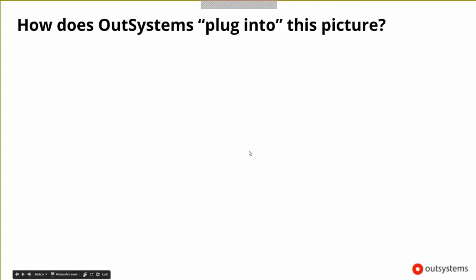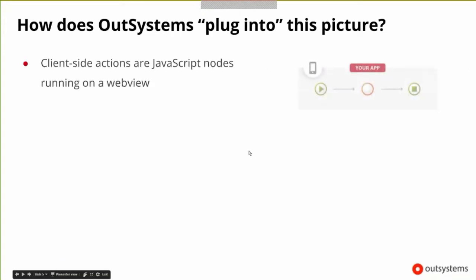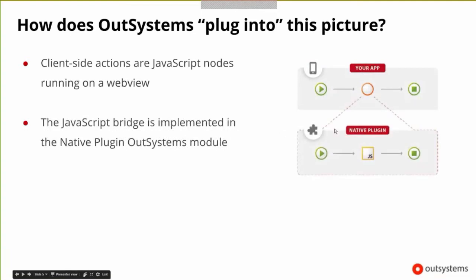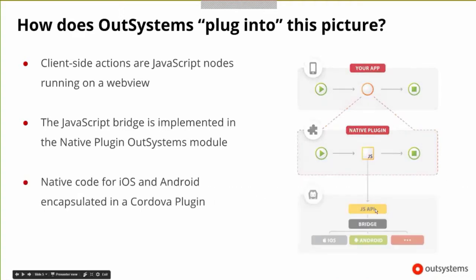Let's see how OutSystems plugs into this picture. Client-side actions are JavaScript nodes running on the WebView — this is your typical OutSystems application. The JavaScript bridge is implemented in the native plugin eSpace or module through a series of JavaScript nodes that tie into the native code for iOS and Android, which is encapsulated in the core of a plugin. This is the native part where you do Objective-C or Java.